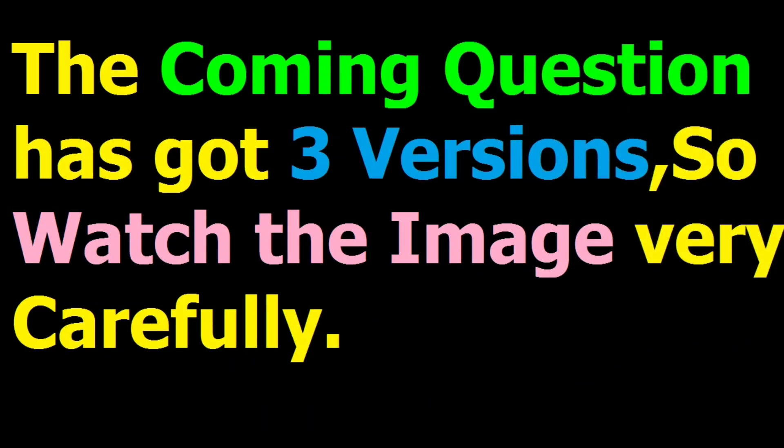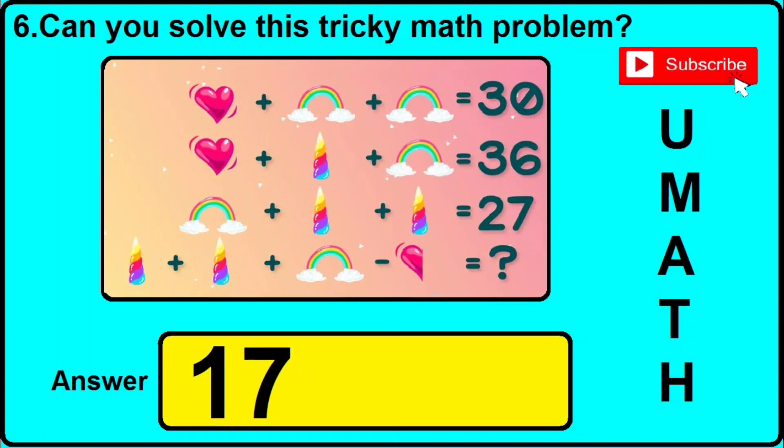Question number 6 also has got 3 different versions or types, so you need to watch the image and click the option I will be showing here. For example, in version 1, if you find this sort of image, then the correct answer for this question will be 1717.